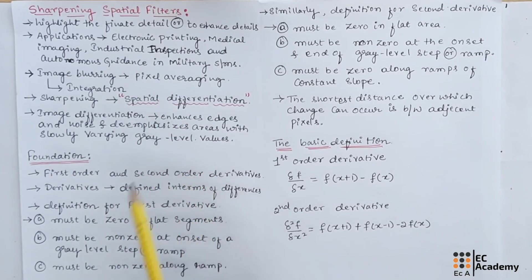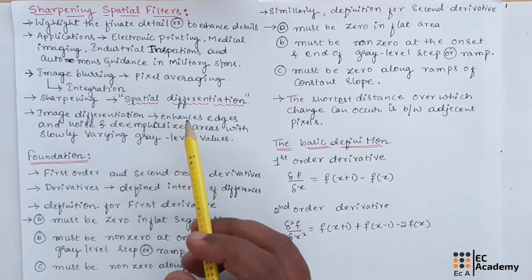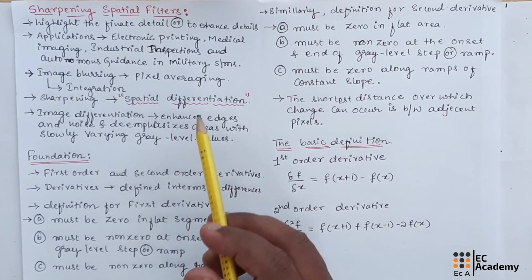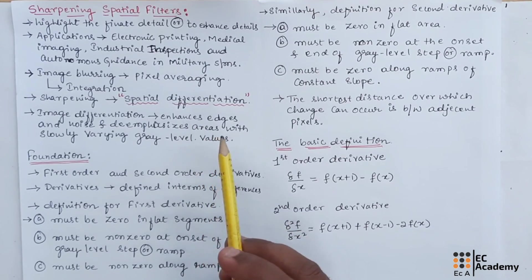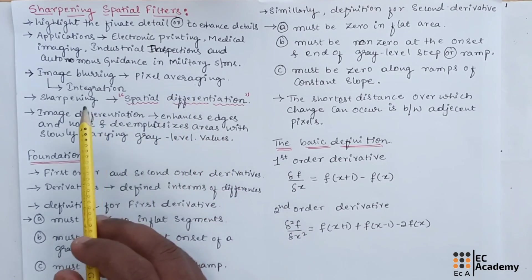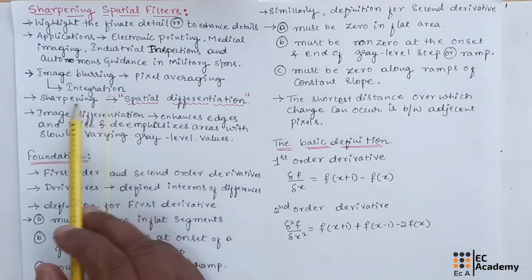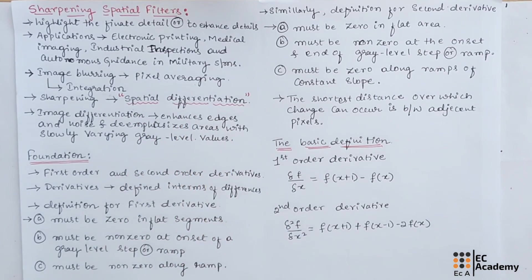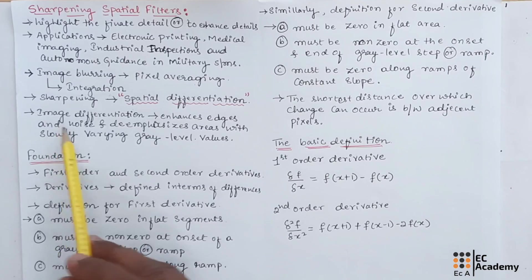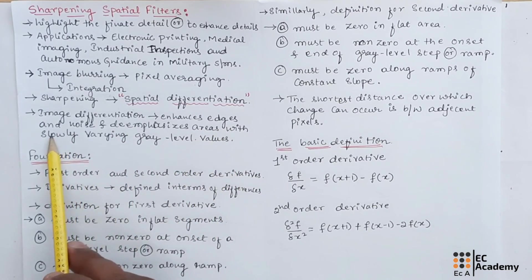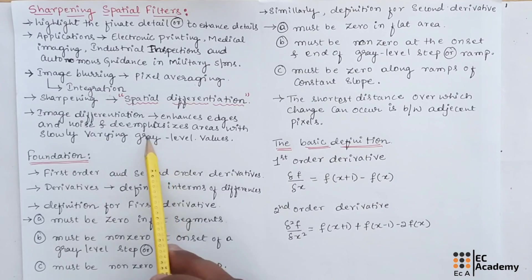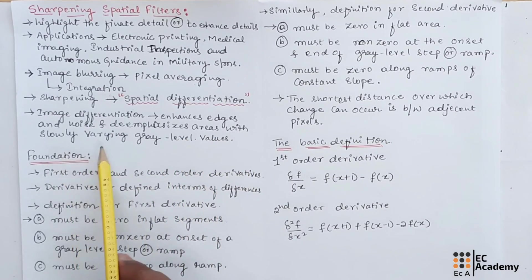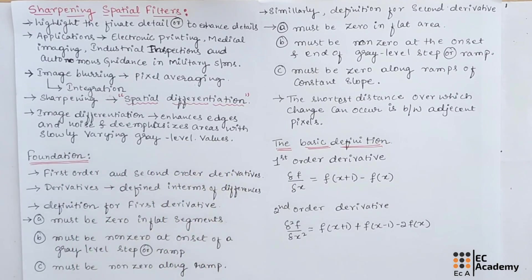In the previous topic, we understood that image blurring can be accomplished in the spatial domain using pixel averaging. Since blurring can be done using integration, sharpening can be accomplished by spatial differentiation. Image differentiation enhances the edges and noise and de-emphasizes the areas with slowly varying gray level values. This is the advantage of image differentiation.